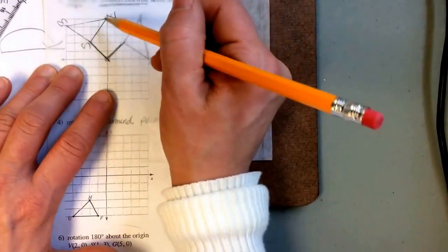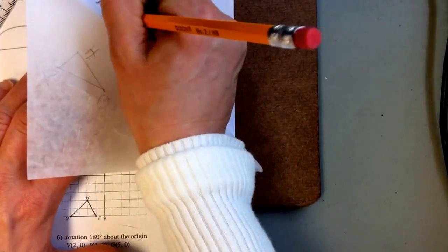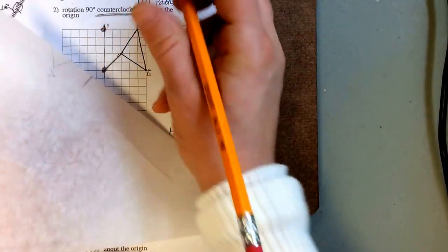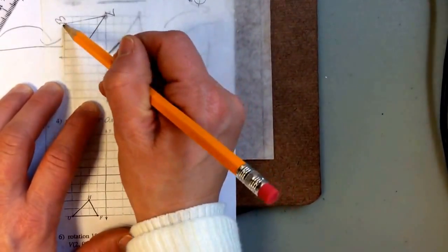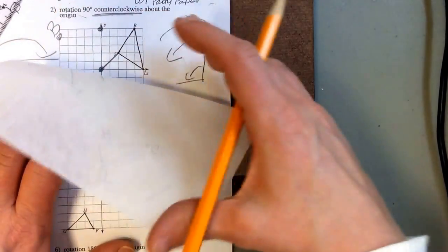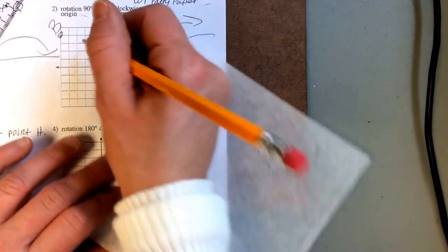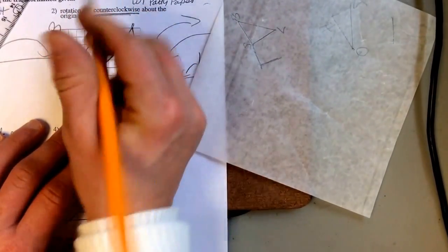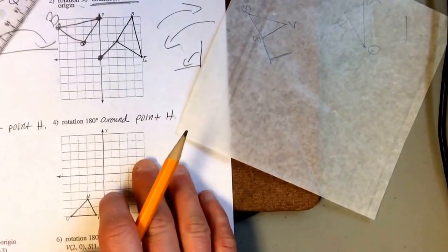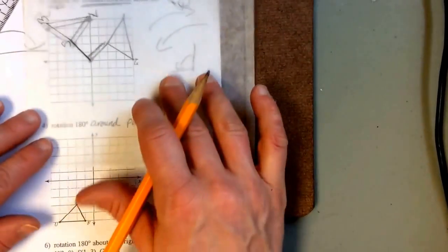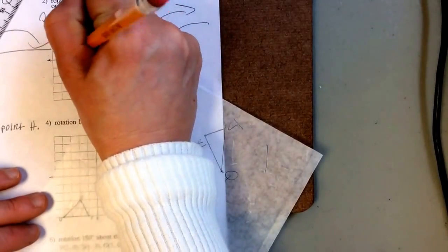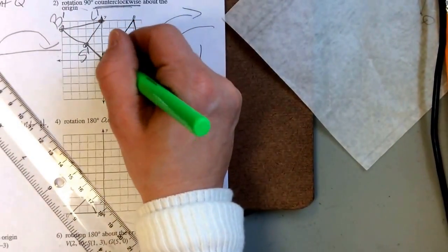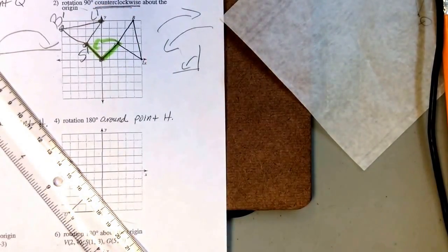Now I put the points in — I need a point there and a point right here. I lift up the paper, place the dots, and connect them. My new S is right here. Remember to put your little tick marks next to the new points. I can double check by drawing a line from S to S prime — a perfect 90 degree angle going in the counterclockwise direction.